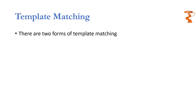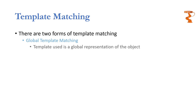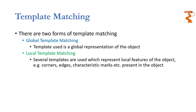Template matching can have two different forms. The first is called global template matching, whereas the second is called local template matching. In global template matching the template represents the whole image or the whole object, whereas in local template matching we use small templates which are not representing the complete object but certain salient features of the objects.